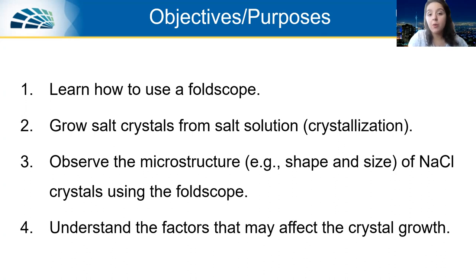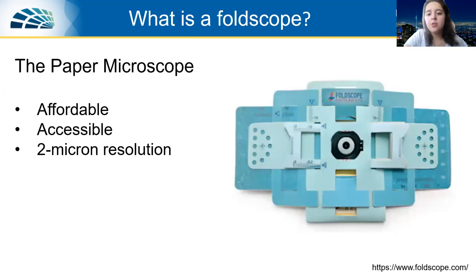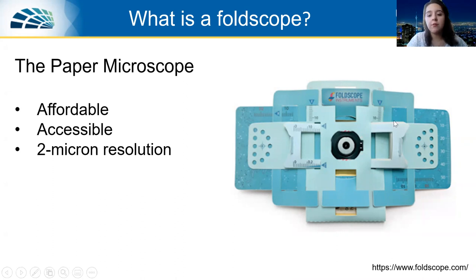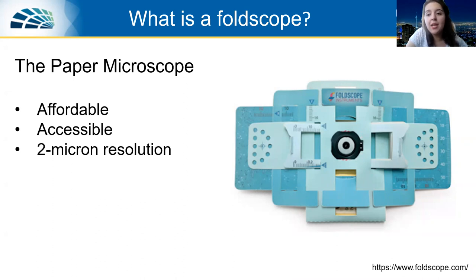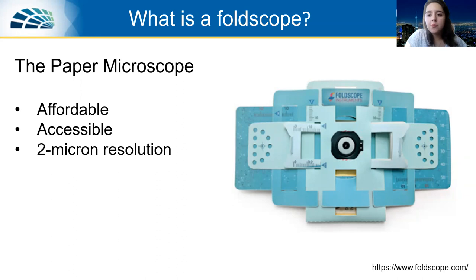Moving on to the next slide, let me tell you what a foldscope really is. On the right, you can see an assembled foldscope. You should have already or will be receiving kits with instructions you can use to prepare your foldscope, just like the one shown here. The foldscope is also called the paper microscope — it's affordable, it's accessible, and it has two micron resolution, which is pretty amazing. Using some very normal lenses and pieces of paper, you're actually able to observe things that small.